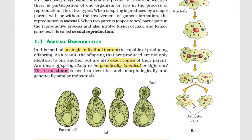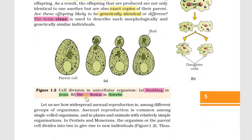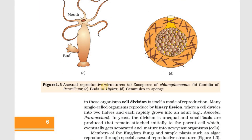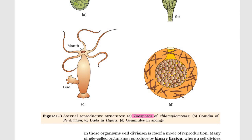There is another type of asexual reproduction called budding. In budding, a bud lands on the parent cell. This is an unequal division. That bud separates and becomes a new offspring. Now we study figure 1.3a — it is a zoospore, an asexual reproductive structure seen in Chlamydomonas. Penicillium is also an asexual reproductive structure. Asexual reproductive structures are also formed in hydra and sponges.